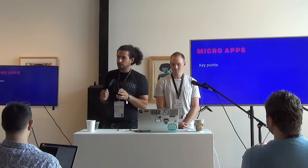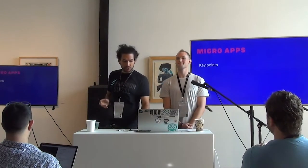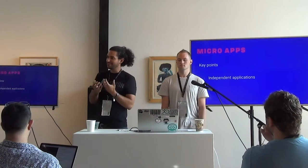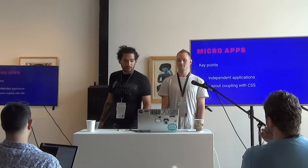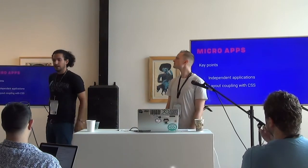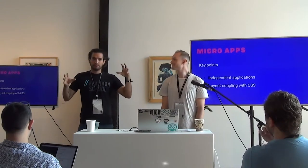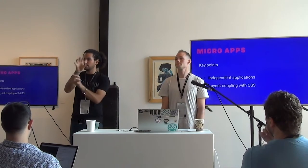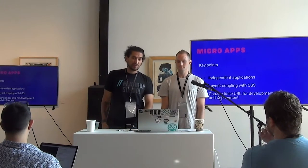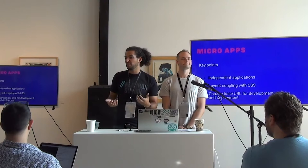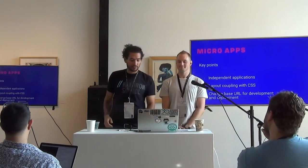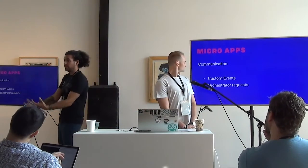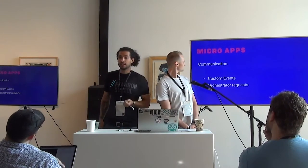So those are micro apps. Key things to keep in mind when building them: they should be independent — you should be able to run them locally by themselves without depending on the other apps. For layout, just use CSS grid — when you run it by itself it should look like something is missing, because that's where the other apps will go. Also think carefully about URL handling and routing, which you don't have to worry about in a single app but becomes important with multiple applications. For communication, you can use custom events to have micro apps talk to each other.